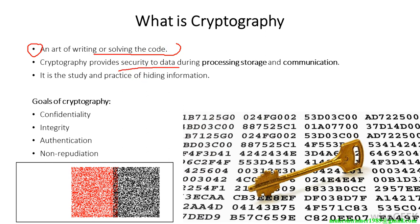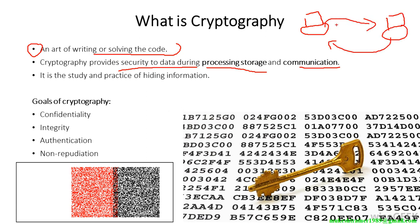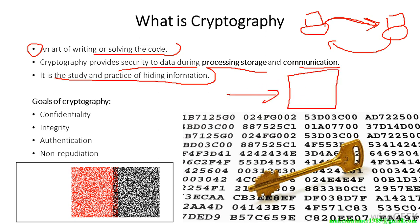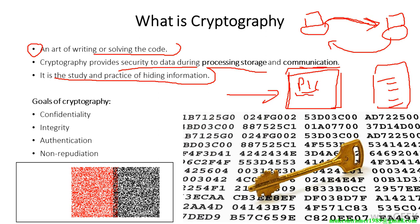Cryptography provides security to data during processing, storage, and communications. It is the study and practice of hiding information. For example, your friend sends you a JPG image. When you open it through a particular software, you find there is a message hidden in the image — he used that software to embed some code inside that photo.